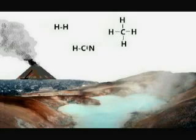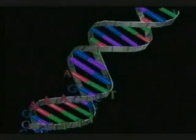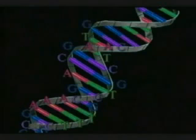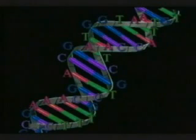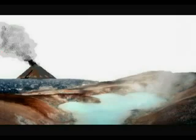Those gases included hydrogen, hydrogen cyanide, methane, and ammonia among them. DNA is a long-chain molecule made from just four different types of nucleotide. So the first question is: where did the nucleotides come from?